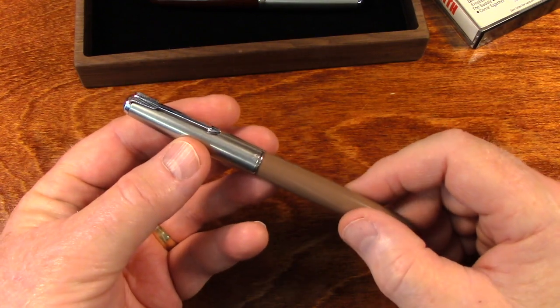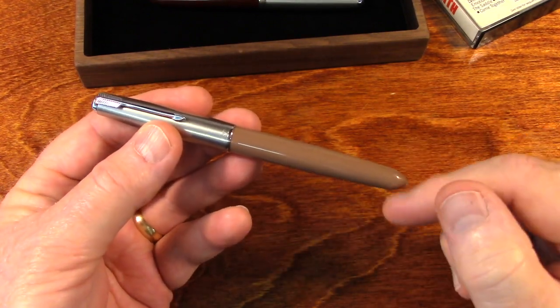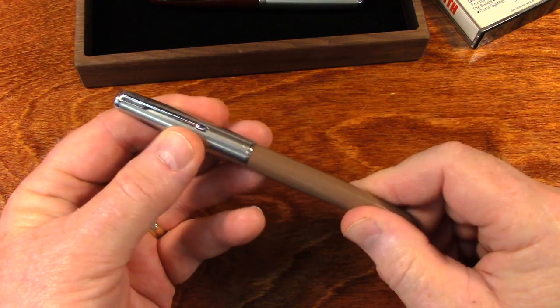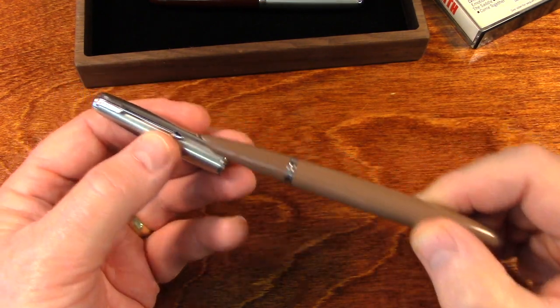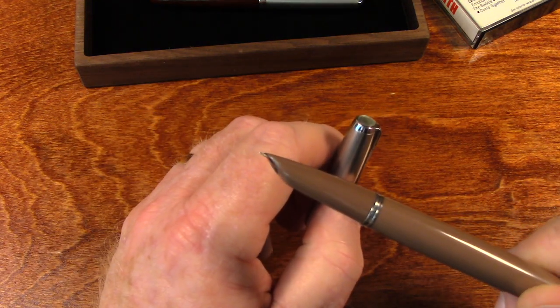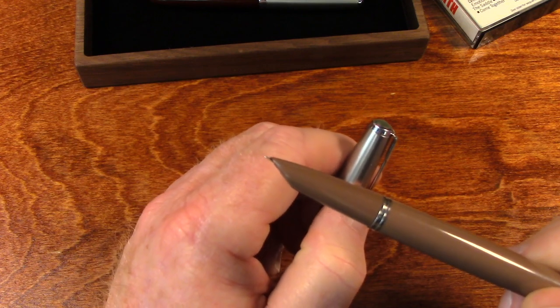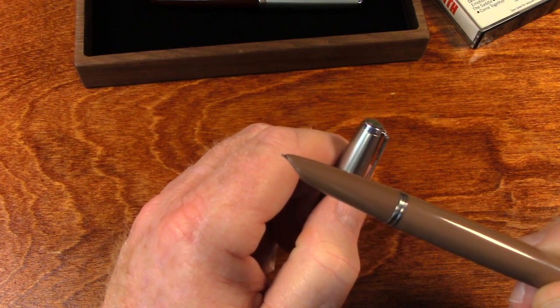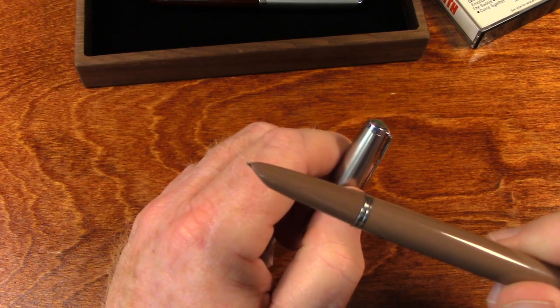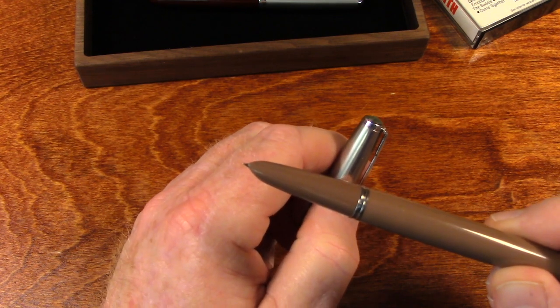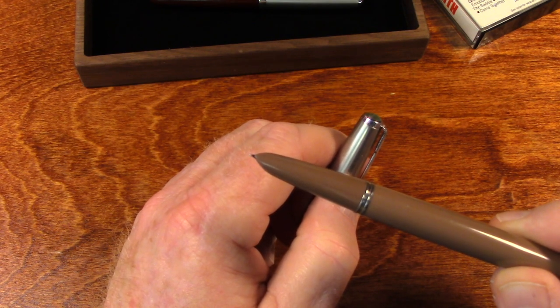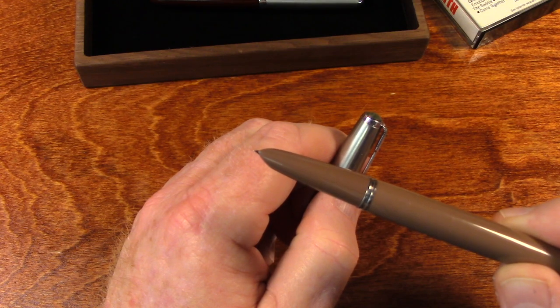This is a Parker 51. The color is cocoa. And the thing about a Parker 51 is that the nib lives under a hood. This was a revolutionary design when it came out back in the early 40s.